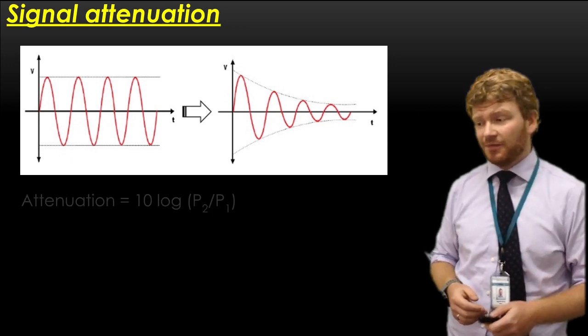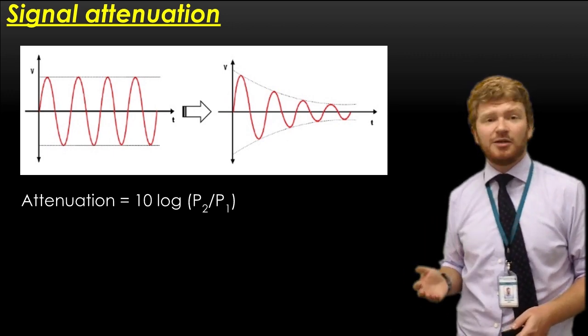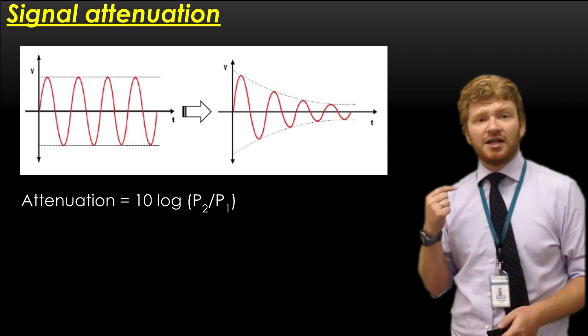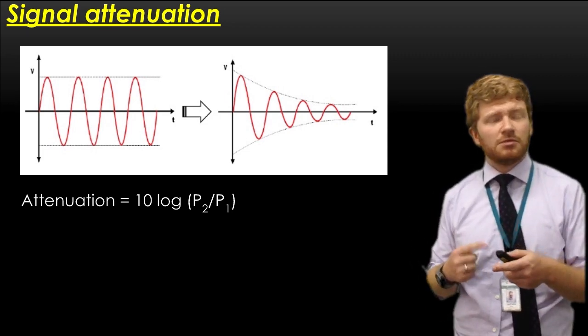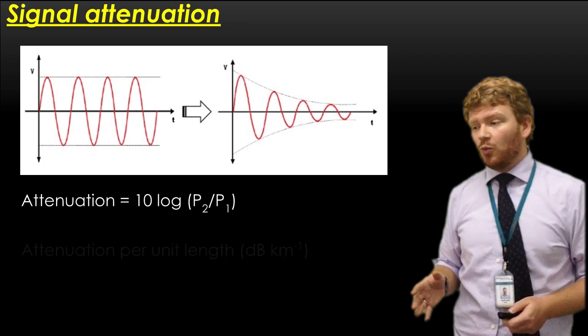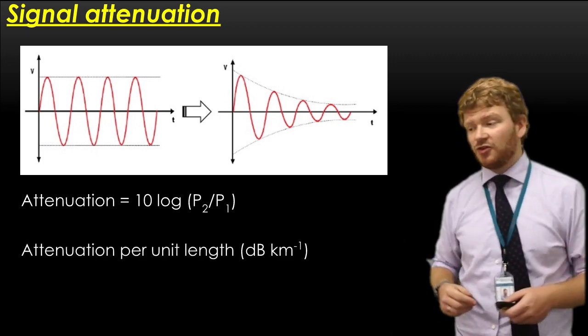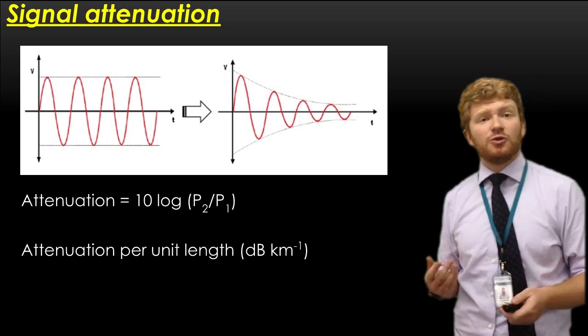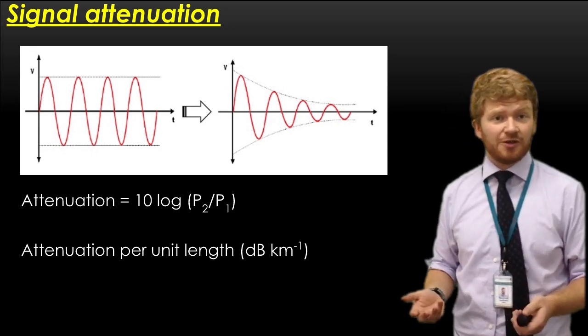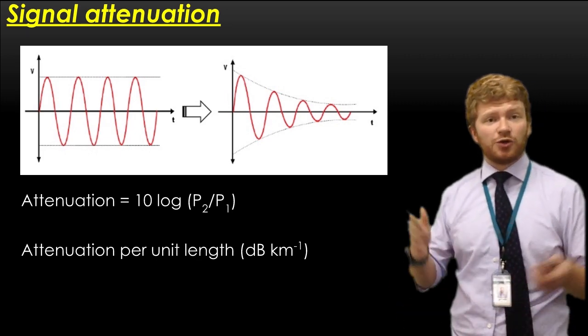So attenuation is a bit of a problem. One of the things you need to know about is attenuation is usually described in decibels. So that is 10 multiplied by the log of the original power divided by the attenuated power. What we will often do with communications wires is you'll get an attenuation per unit length. So you might buy a reel of cable and it will say attenuation of 50 decibels per kilometer. So that will allow you to work out what your signal attenuation will be based on how long you need to run the wire for.